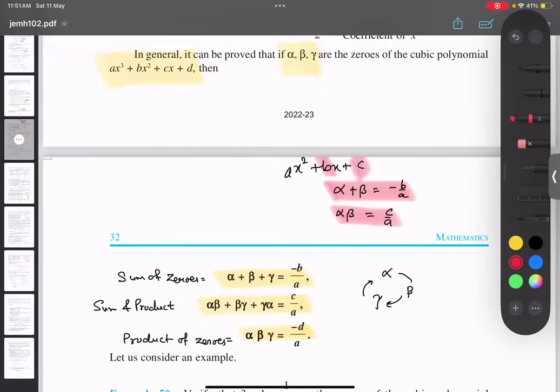Similarly over here, sum is second term and the first term, and product is last term and first term. Understood?